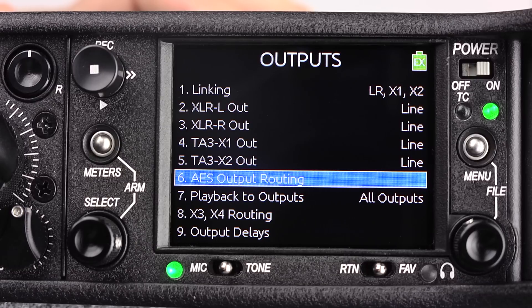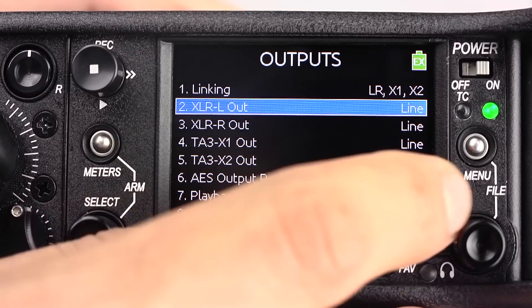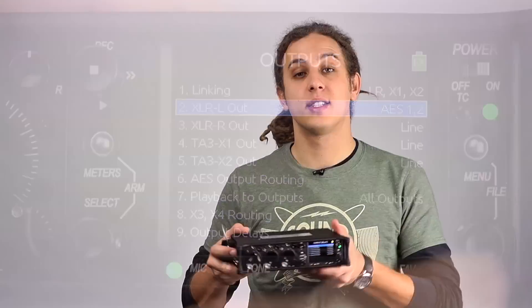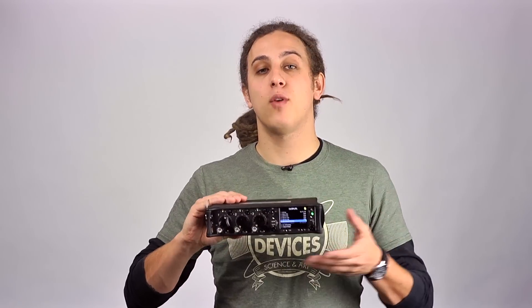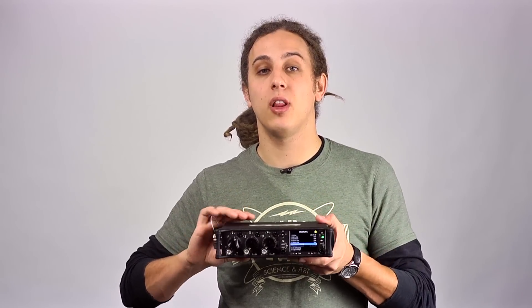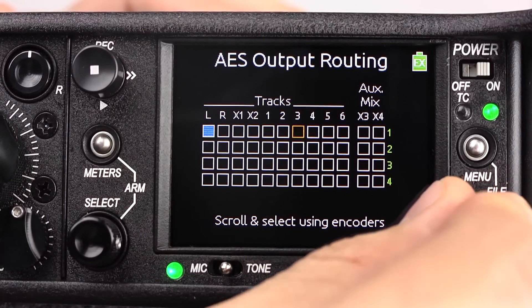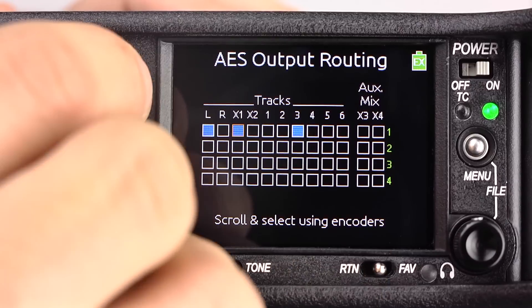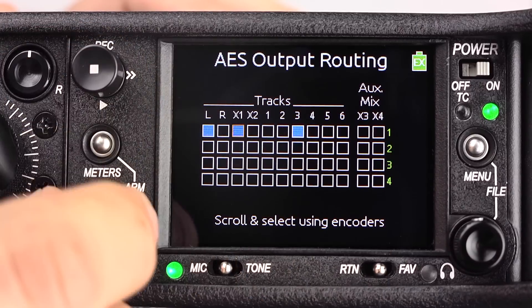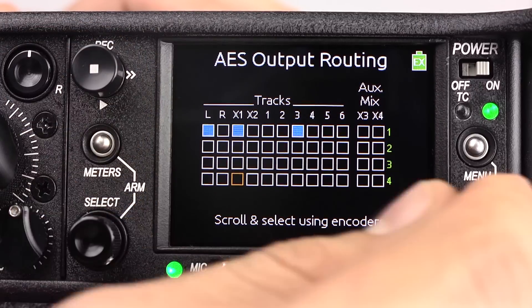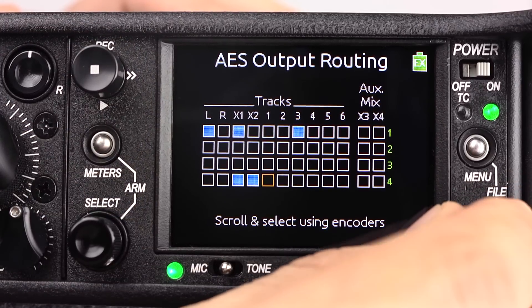Also in the outputs menu, we can link outputs, set an output's type, and assign output delays for each individual output. Up to four channels of digital audio can be output over the balanced XLR connectors. All AES routing is done in the outputs menu as well. By selecting AES output routing, we can route any track to any of the four AES outputs.